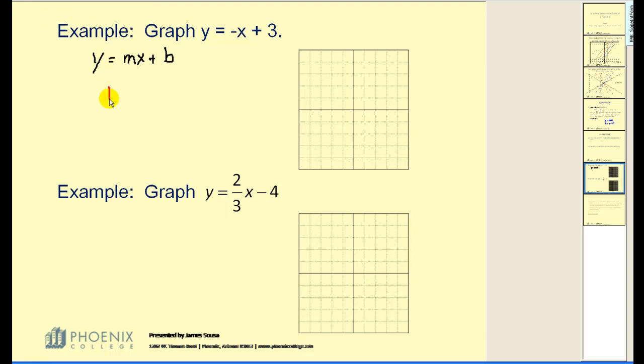Now, it's easy to see that b is equal to positive 3. m is the coefficient of the x term, which would be negative 1. In order to use the slope though, it's helpful to have it in fraction form, so I'll make it negative 1 over 1.